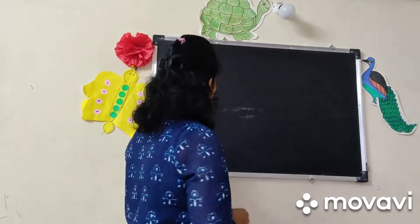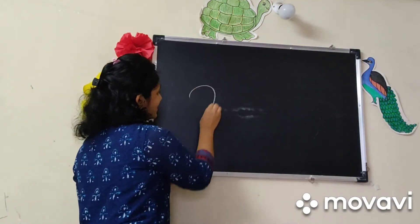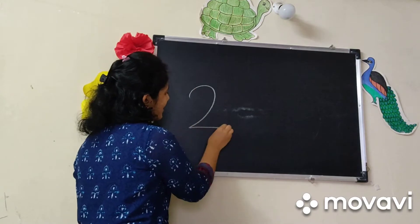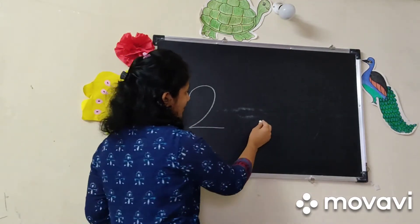So children, see here. This is number 2. And then 3.